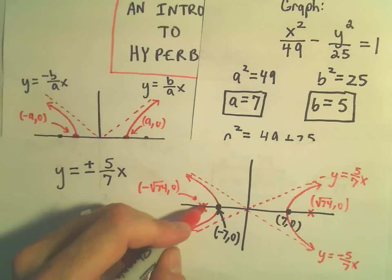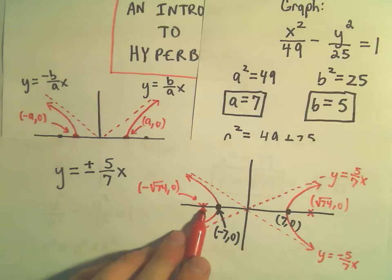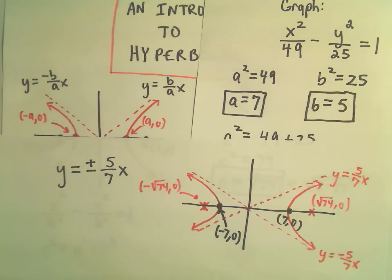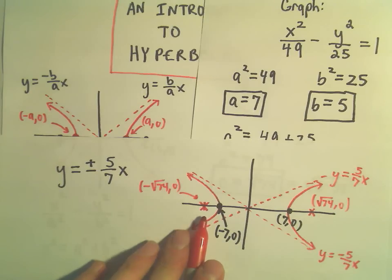Again your graph doesn't go through those foci. So I'm just sticking a little x there just to indicate where they are. Your hyperbola doesn't go through those points. But again those are kind of useful bits of information finding the foci.